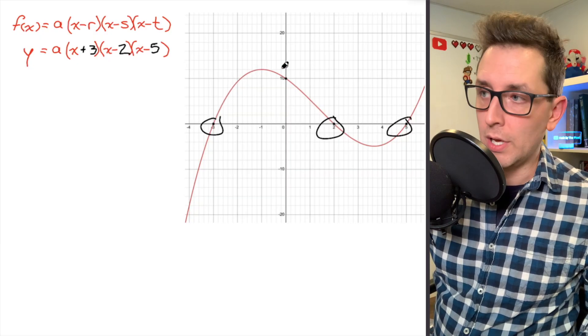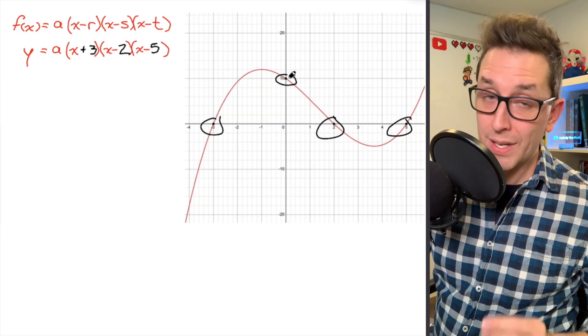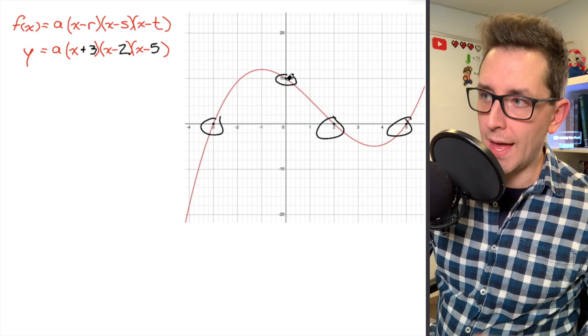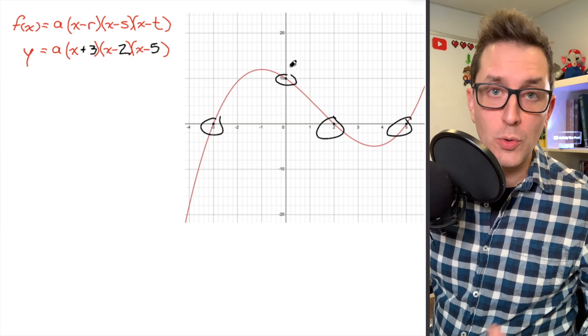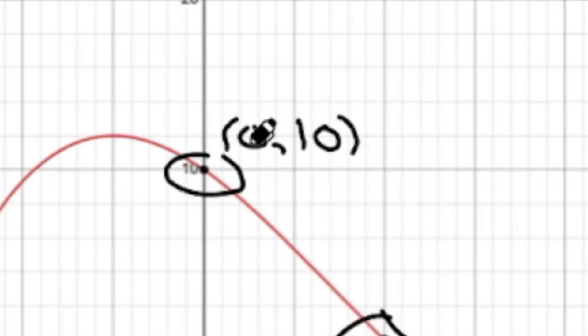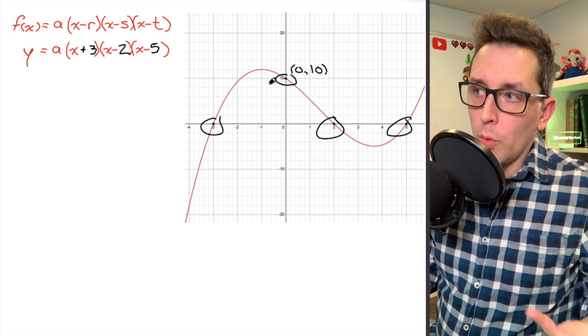Now, I'm going to pick on this point in particular, because it's very easy to see the coordinates of that point there. That's the y-intercept, and the coordinates of that point are 0, 10. We have an x value of 0 and a y value of 10. So what am I going to do with that point?